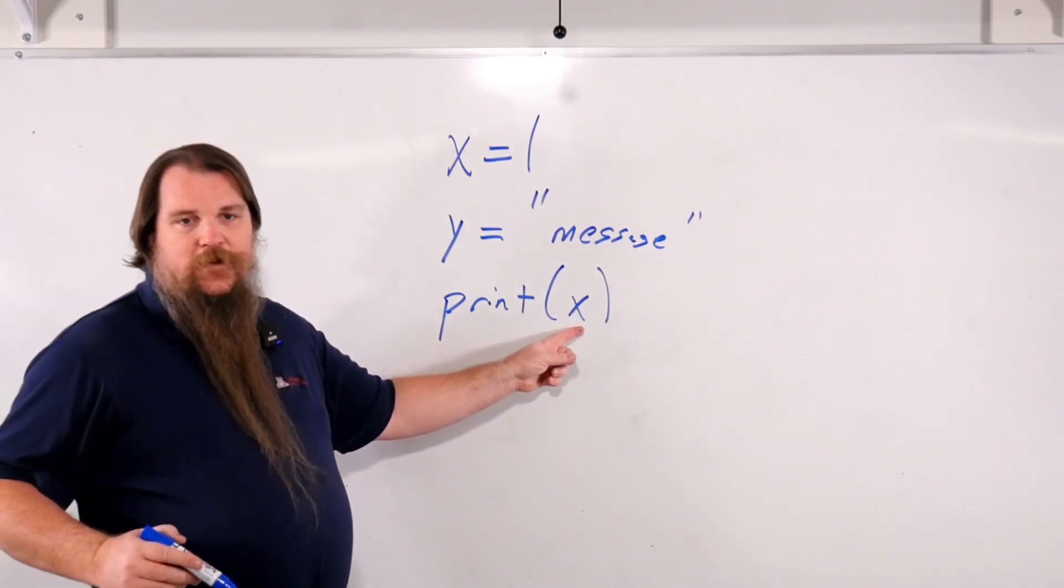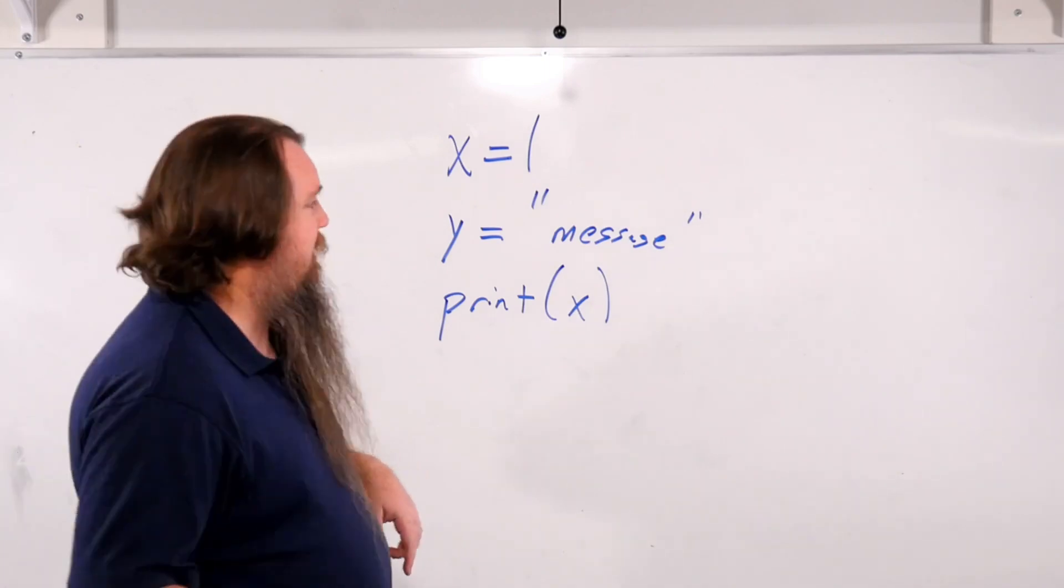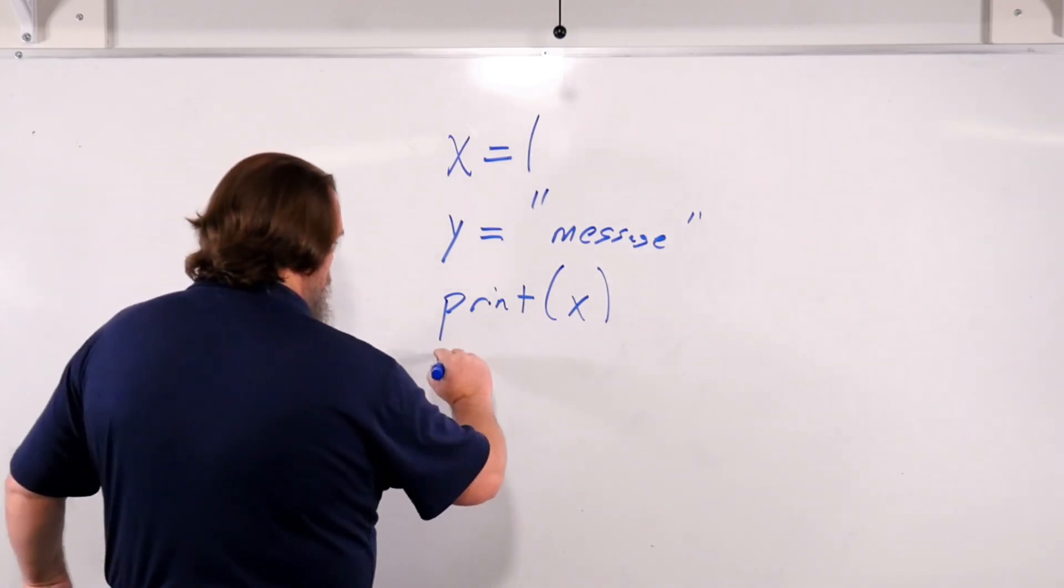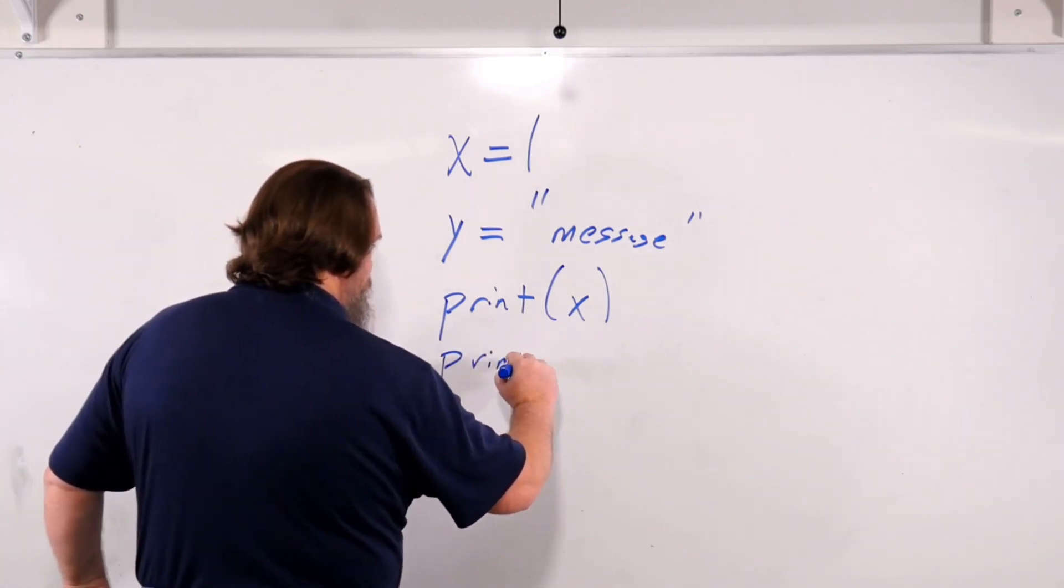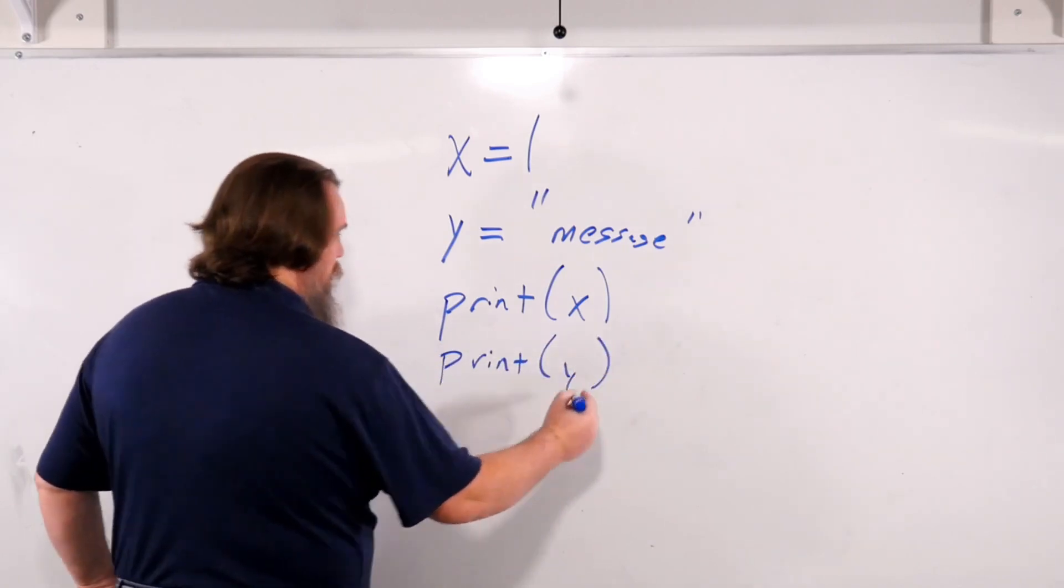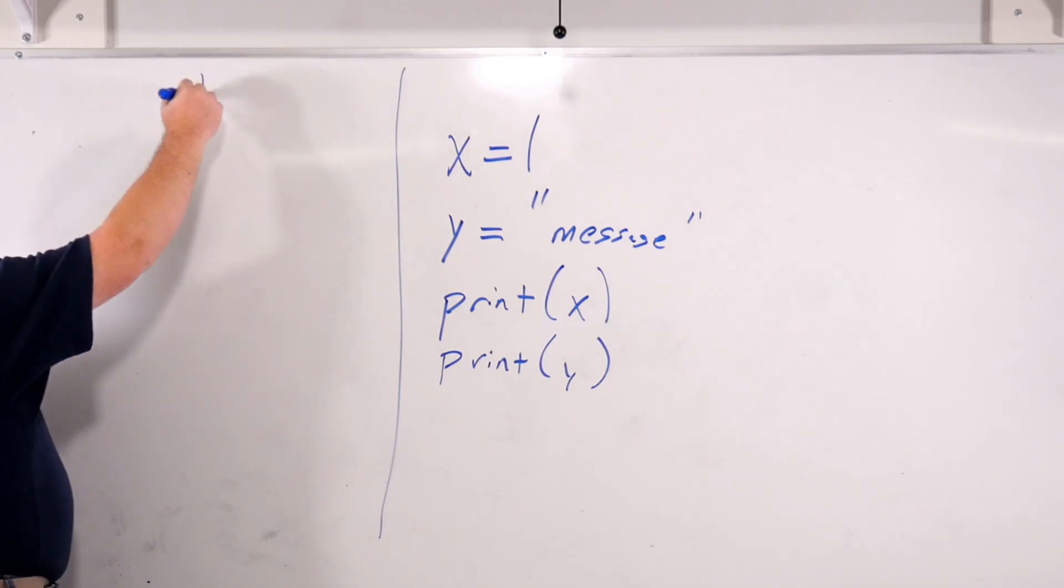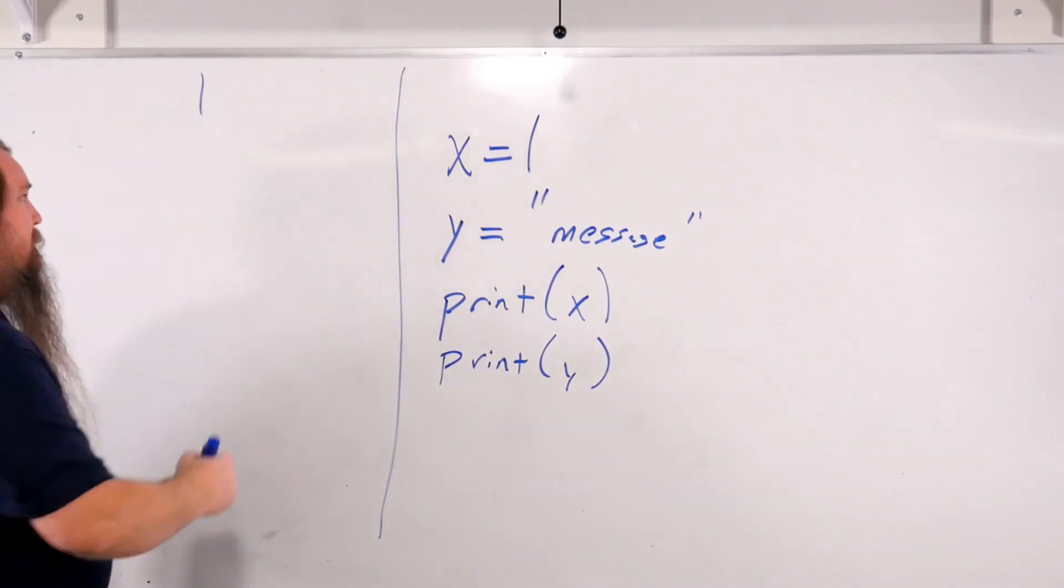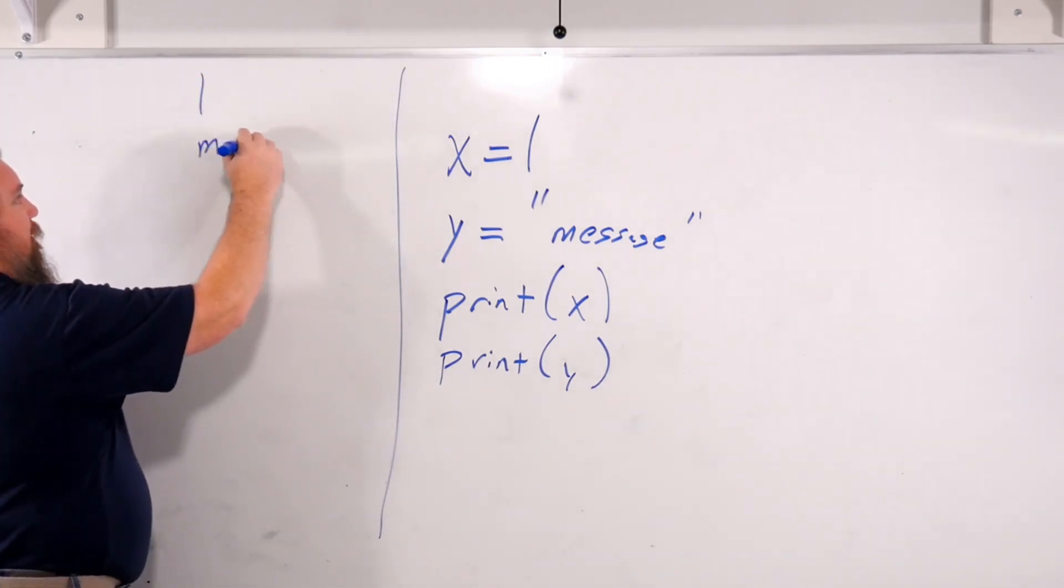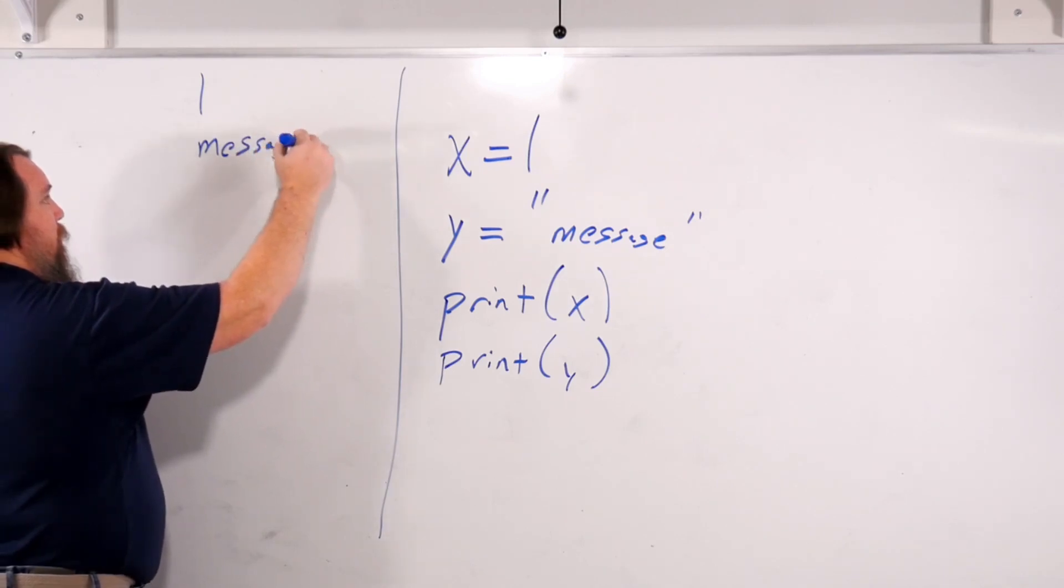In Python, it will automatically put a trailing newline at the end of the output. So if we say print x and then print y, then what our output would look like is that it will print one, because that's x, and then it will print message.